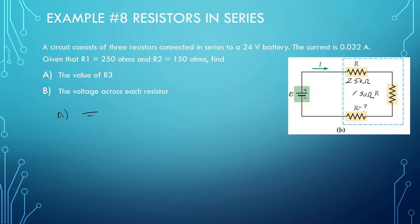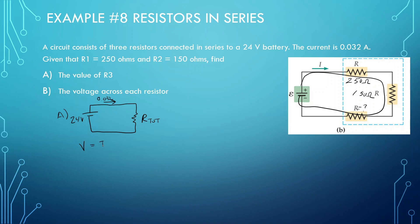Let's make a little chart. We have 24 volts and the resistance equivalence — we can call this R total. The current is going to be 0.032. Since this is just one wire, the current is the same throughout the whole wire. So V total equals current total times resistance total: 24 equals 0.032 times R. So R total equals 24 divided by 0.032, which is 750 ohms.